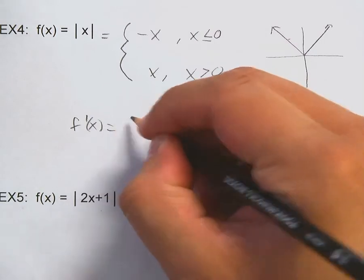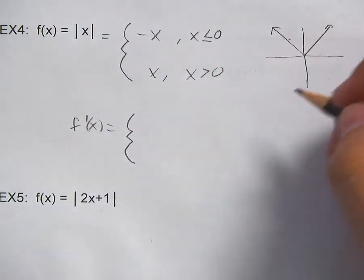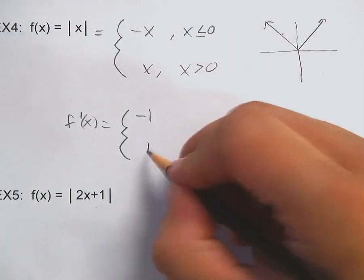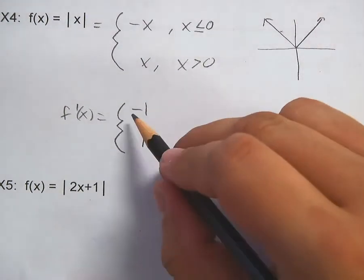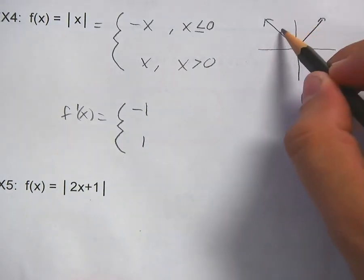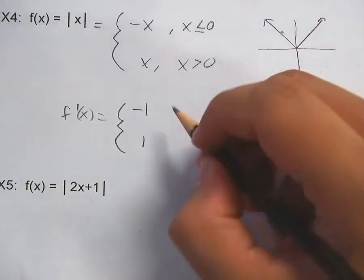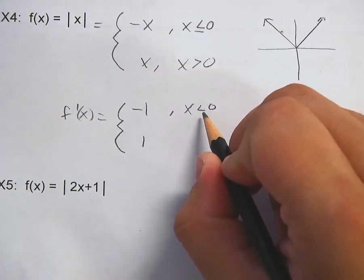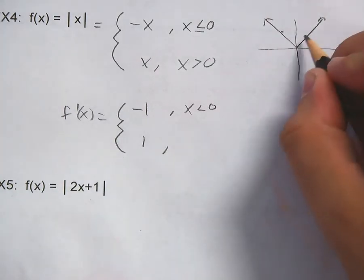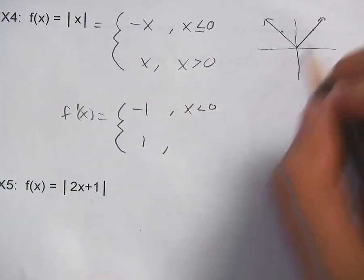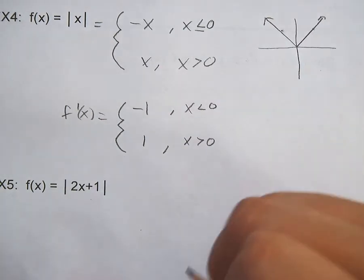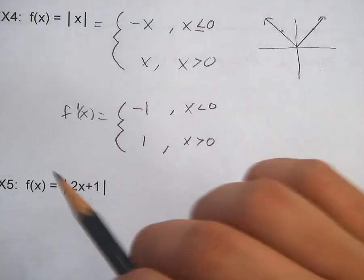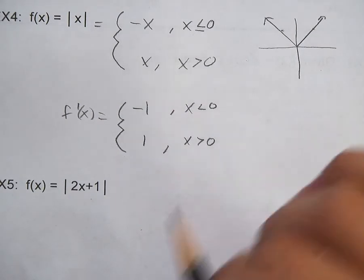Let's differentiate. f prime of x: the derivative of negative x is negative one, and the derivative of x is one. The slope is negative one when x is less than zero — no equal sign, because I'm ignoring that point — and the slope is positive one when x is greater than zero.